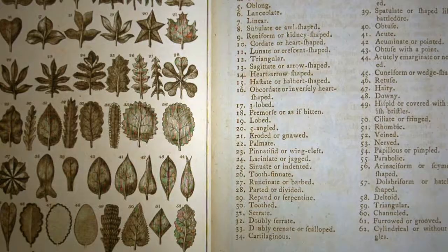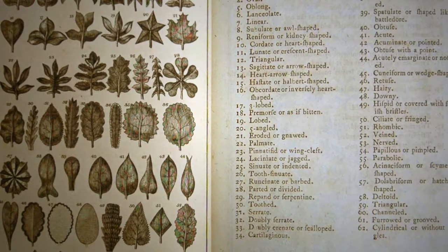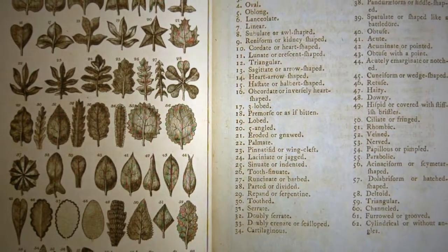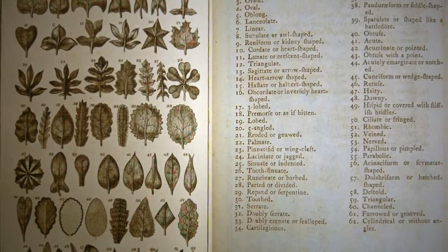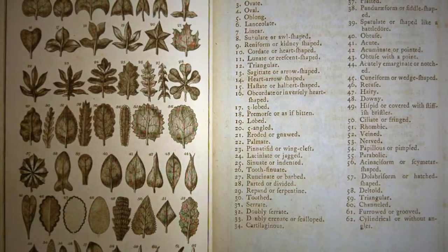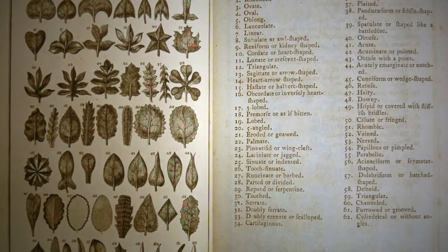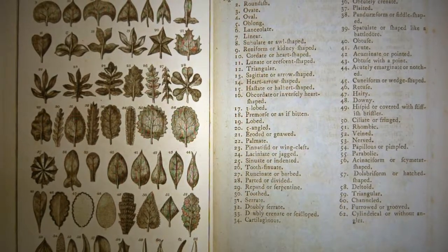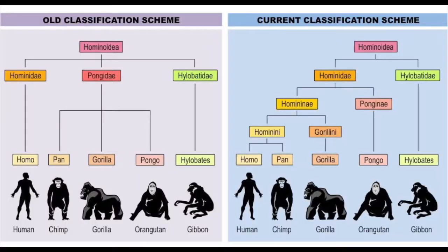While Linnaeus developed his system based on artificial classification using the structure and appearance of reproductive organs of flowers, the system is supported by science because we have reclassified organisms whenever new evidence was produced.